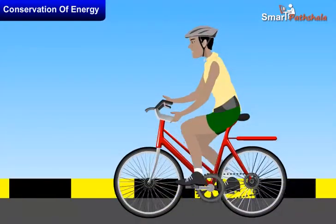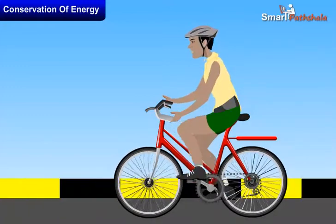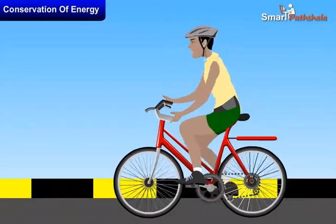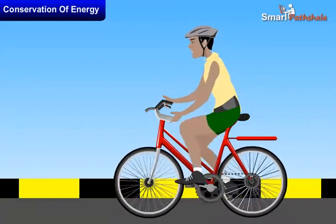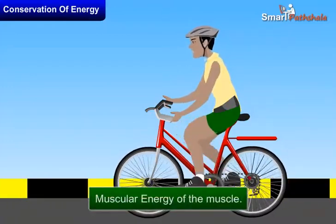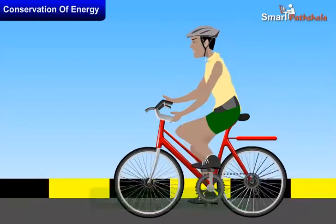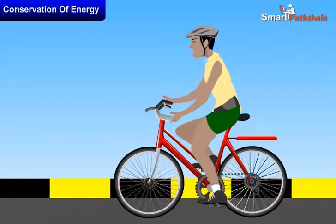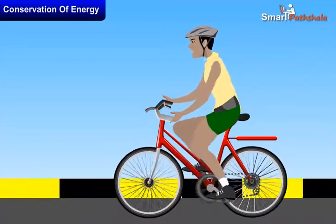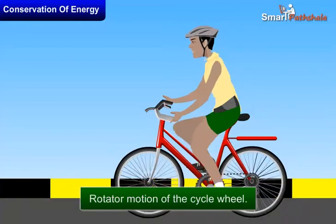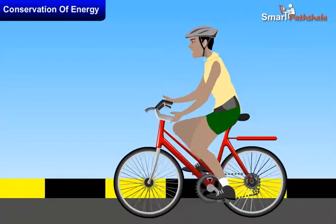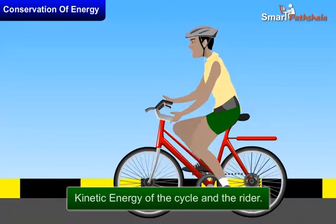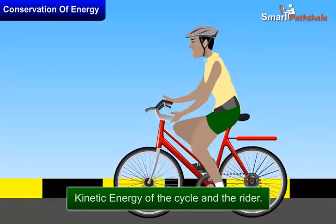What kind of energy transformation takes place when a boy rides a bicycle? When a boy rides a bicycle on the road, the muscular energy of the leg muscles is converted into mechanical energy of the pedal, which is further converted into rotational motion of the cycle wheel and finally converted into kinetic energy of the cycle and the rider.